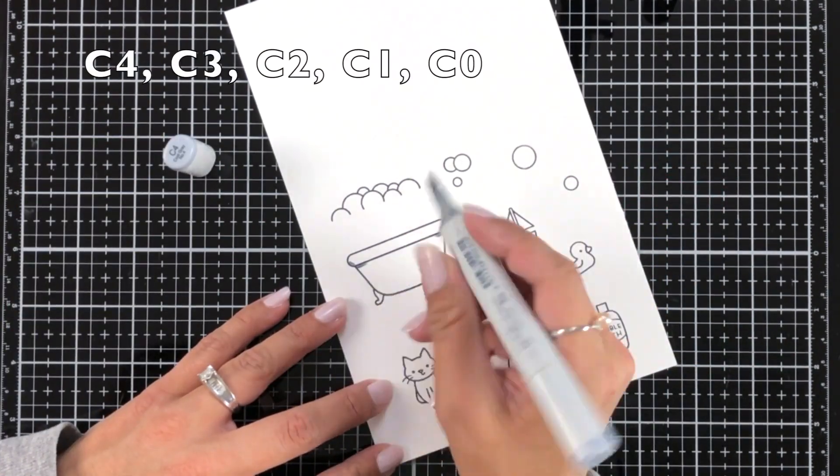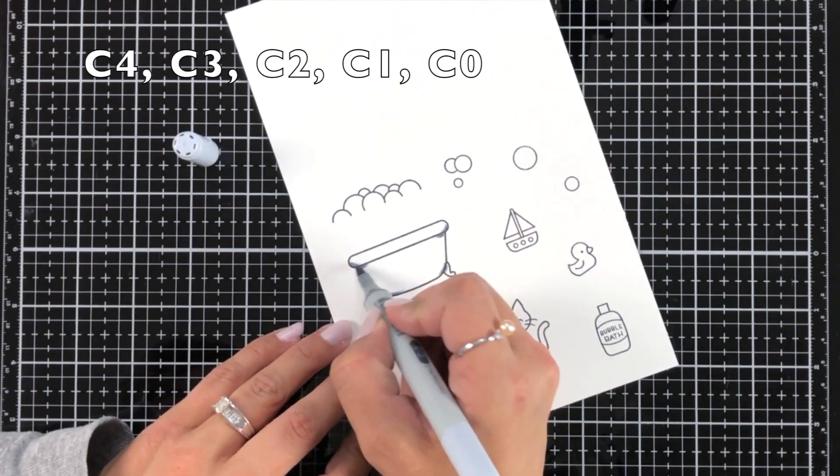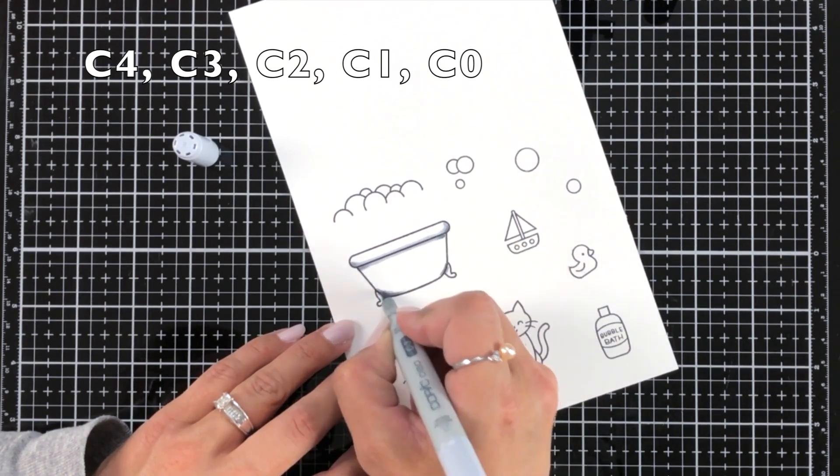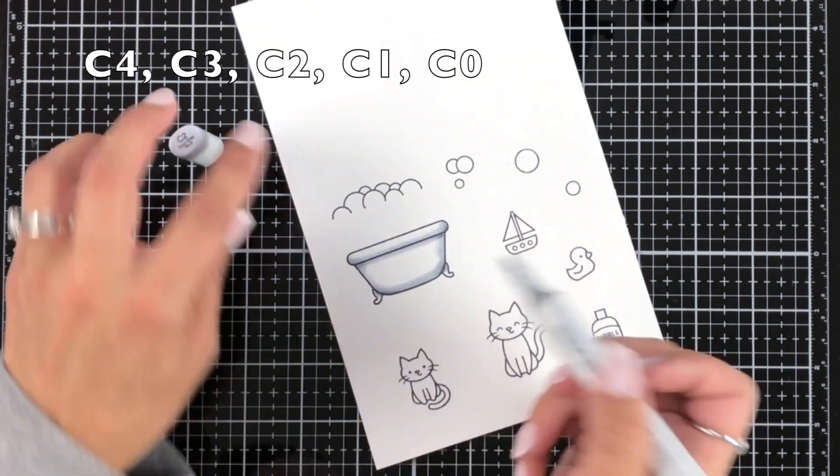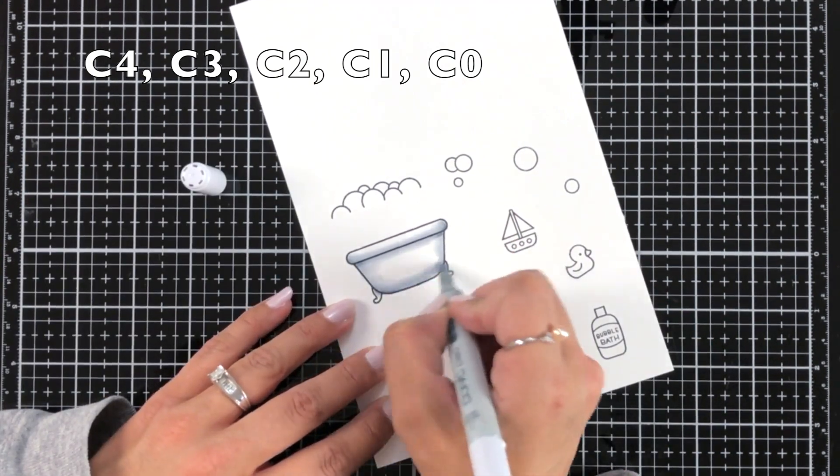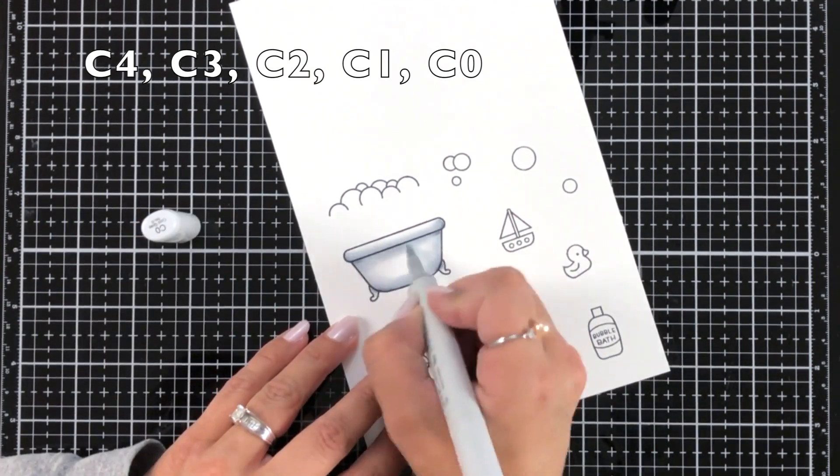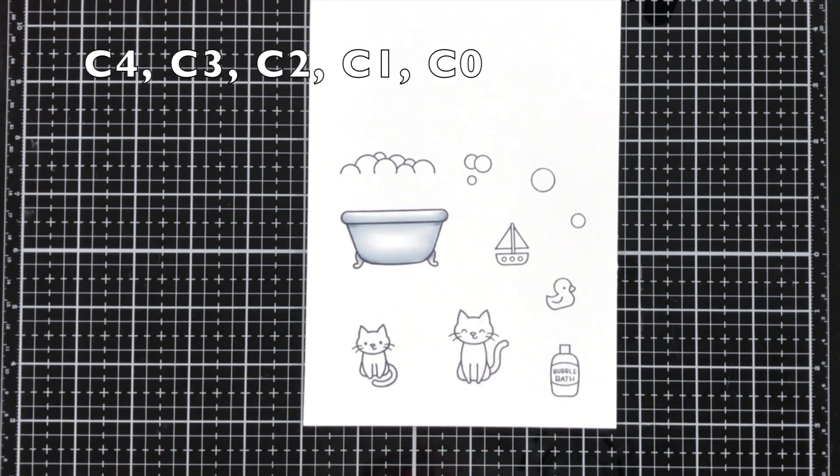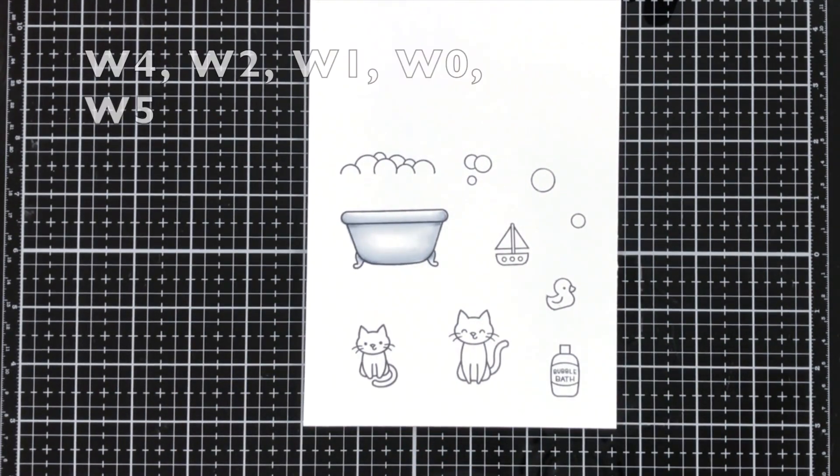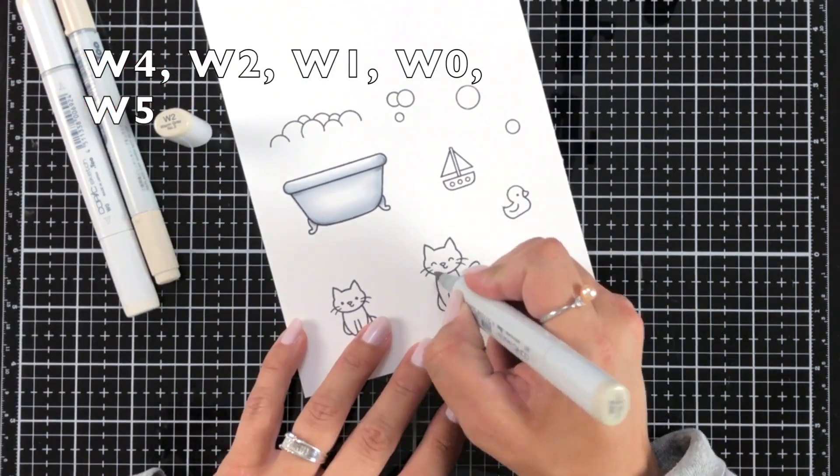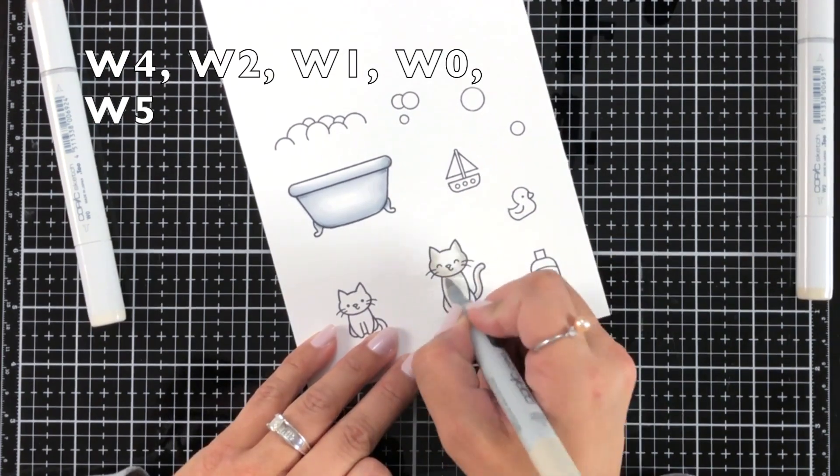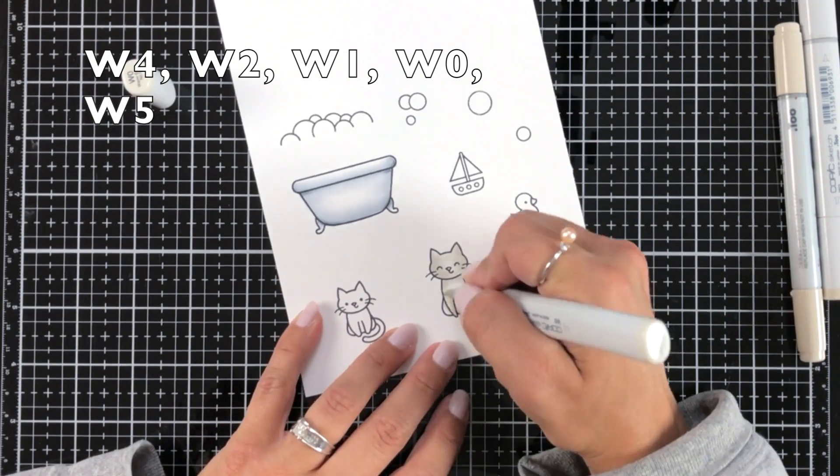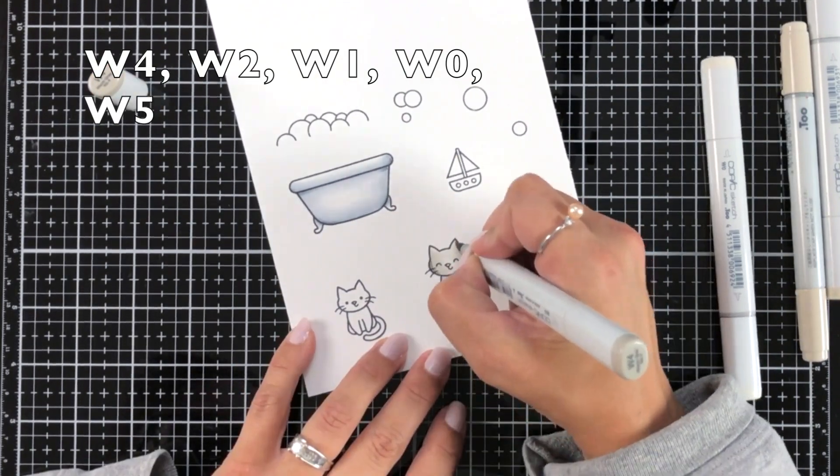I'll start my card by doing some Copic coloring. I stamped the images onto Lawn Fawn white cardstock with Jet Black ink and I'm starting out by coloring the tub, which is sometimes kind of hard to color when you want it to be white. I went with some cool grays. For the tub I used C4, C3, C2, C1, and C0 and I will list the colors at the top of the screen.